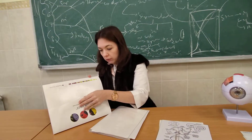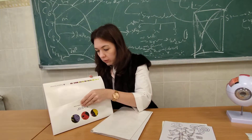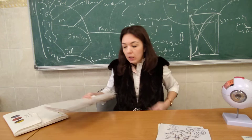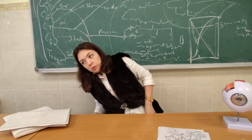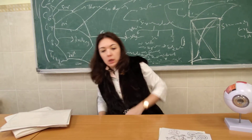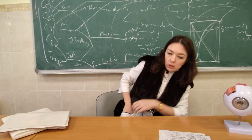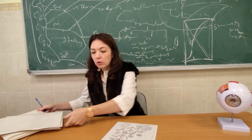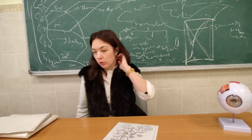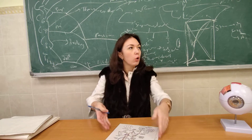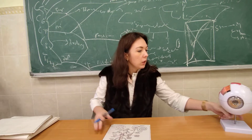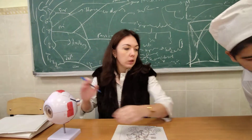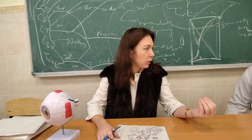It will take us two classes, then two classes for cranial nerves, and one class for the autonomic nervous system. After that, it will be common — covering cranial nerves and autonomic nervous system together. And that is all. After that, you must have completed the course.